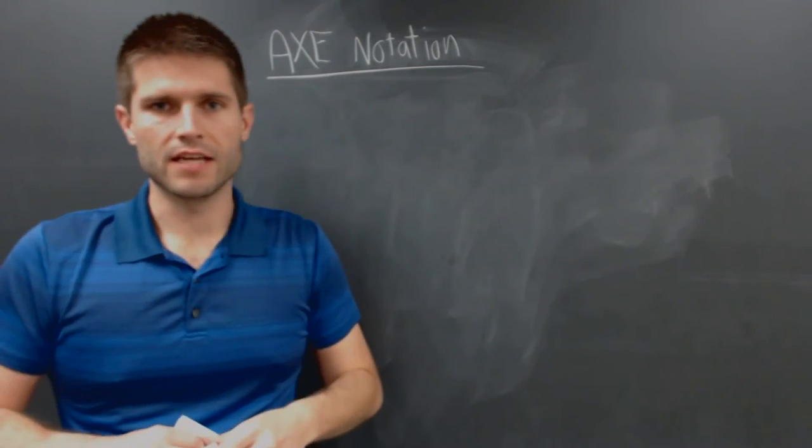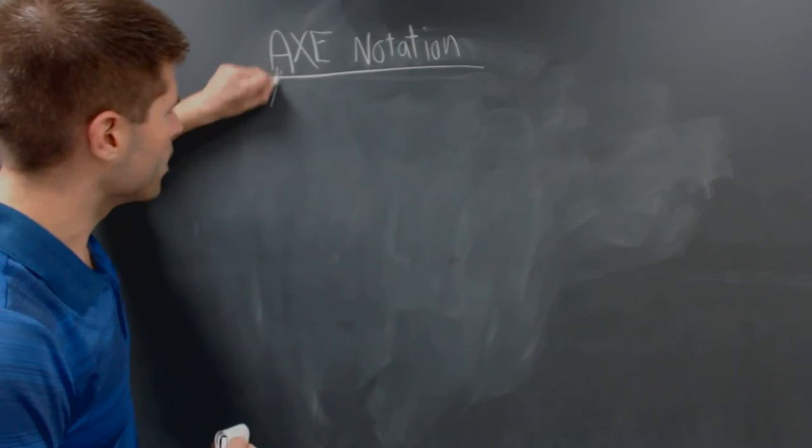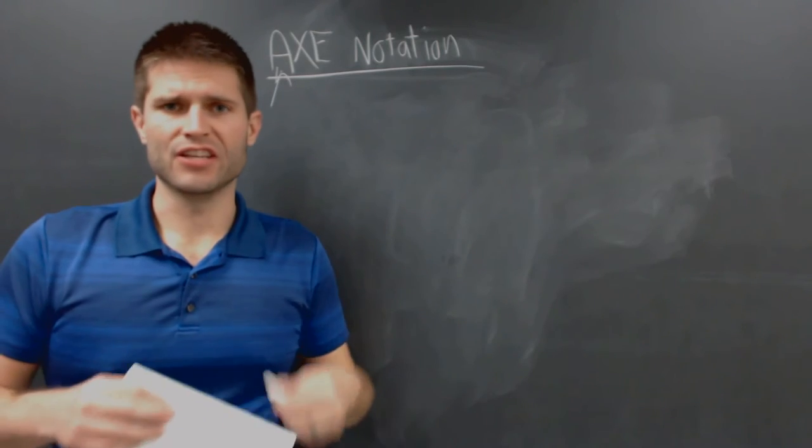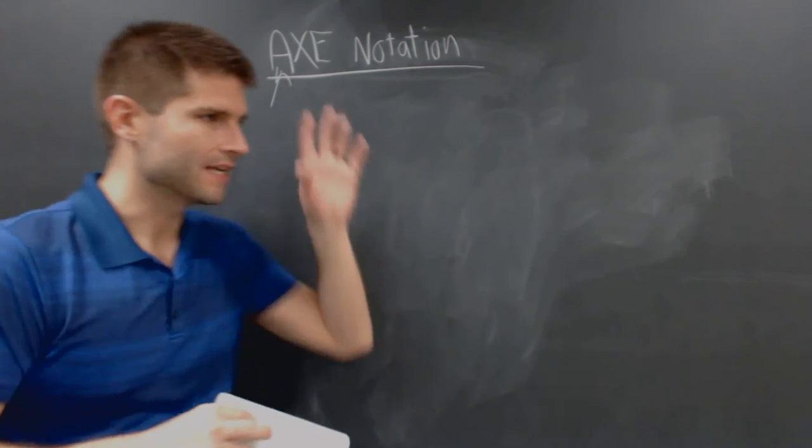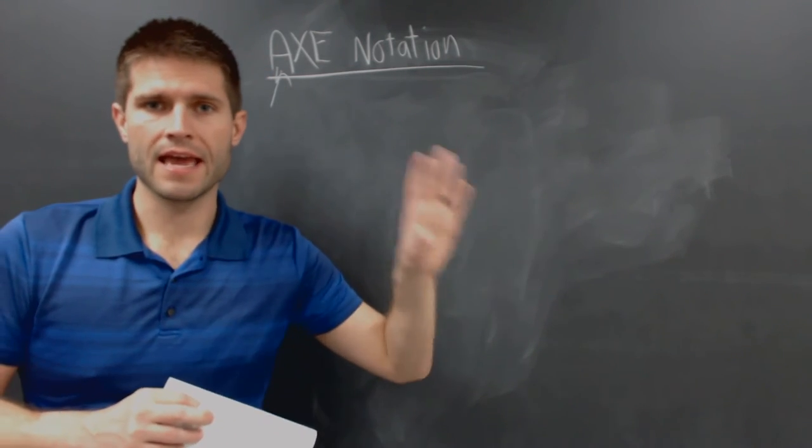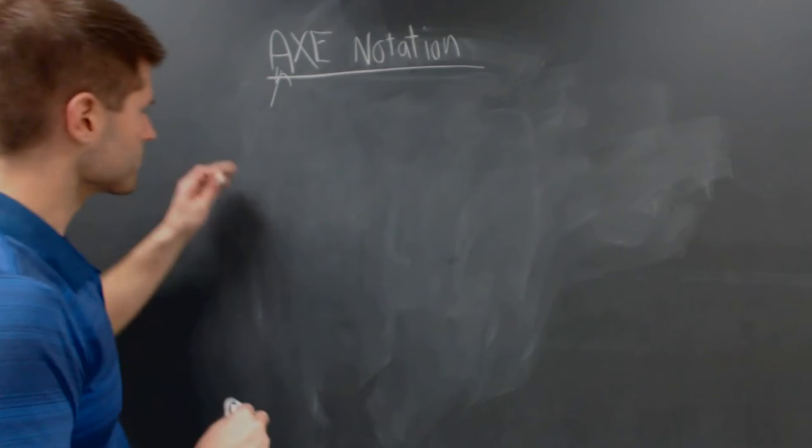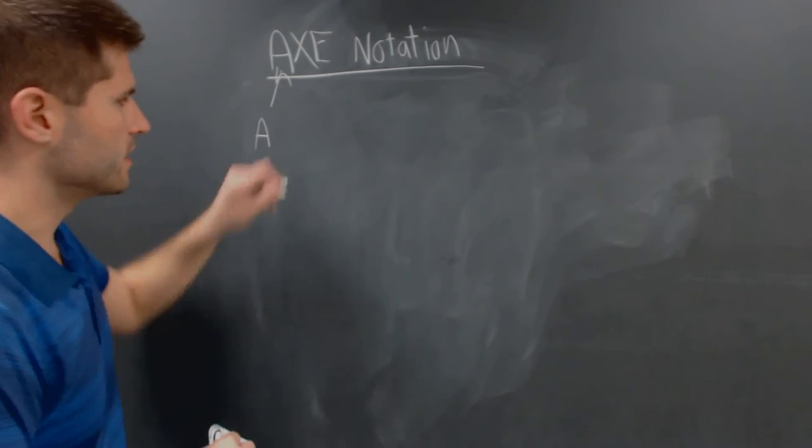Now this is a way of denoting molecules. And it's called the A, X, E notation. Now the A is always just going to be written as an A. It's just a letter that we denote this. It tells us that we're looking at the A, X, E notation. So this is always just going to be written as an A.